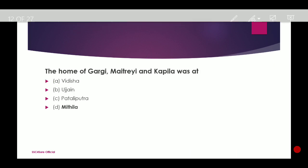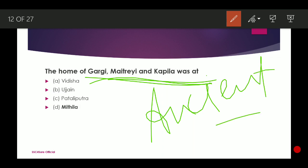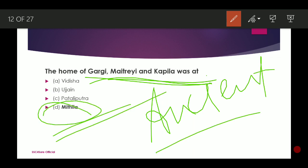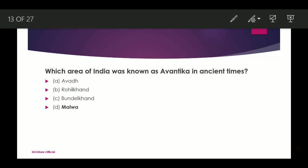The home of legendary ancient Indian women Gargi, Matri and Kapila was Mithila — currently in Bihar state of India. Next: Which area of India was known as Avantika in ancient times? There were ancient names for cities like Kashi and Kanchivaram. Avantika was the name of Malwa, which is currently in Madhya Pradesh.